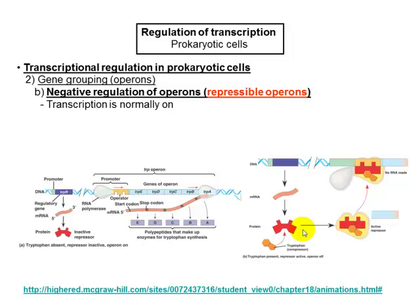When tryptophan is absent, the promoter is constitutively active — RNA polymerase goes through and makes the RNA, producing tryptophan. Once tryptophan is present at high concentration, it binds to a repressor molecule. That repressor changes conformation and can then interact with the operator close to the promoter, blocking RNA polymerase from making more RNA.